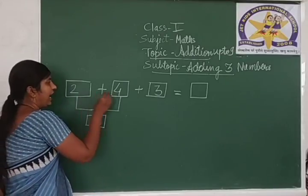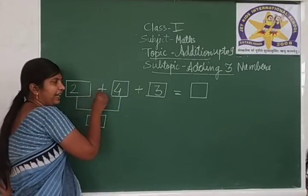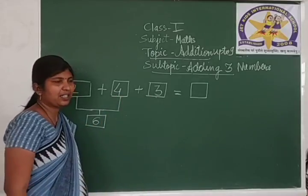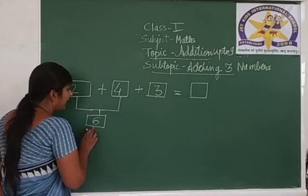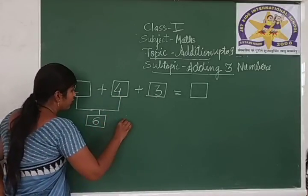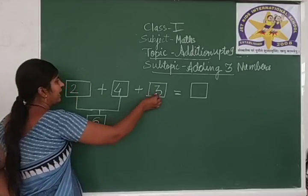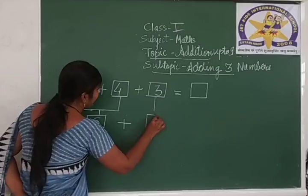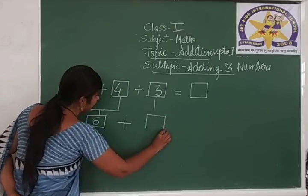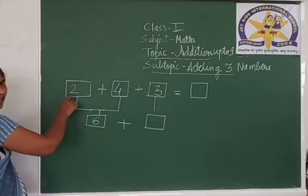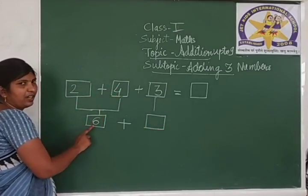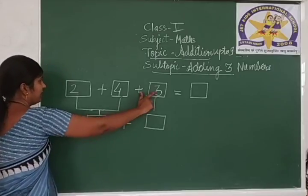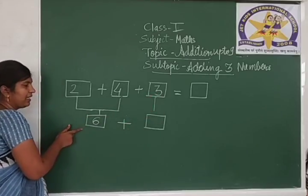Now we added these 2 numbers, 2 and 4, and this 3 is remaining. We got the answer 6. So what will we do? We will add this remaining 3 in the obtained answer. The answer is 6. Adding these 2 numbers, we got this answer. So we will add 3 in this answer 6.